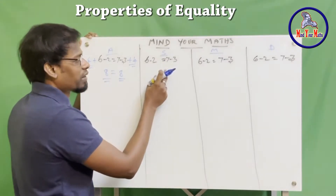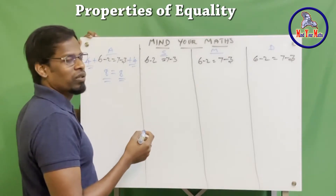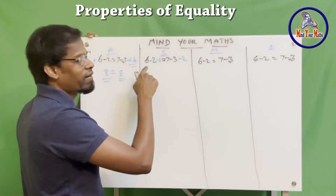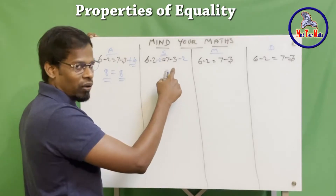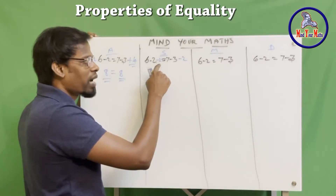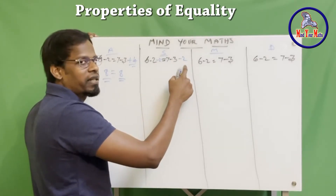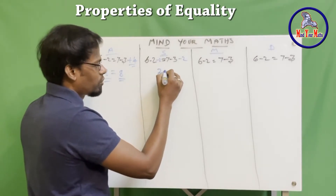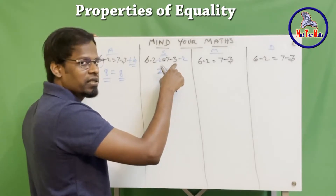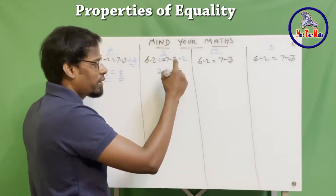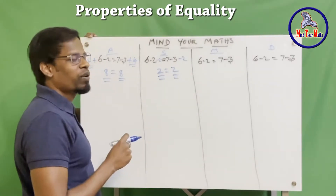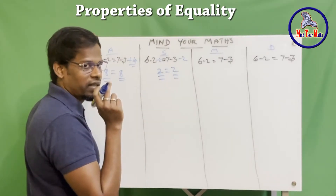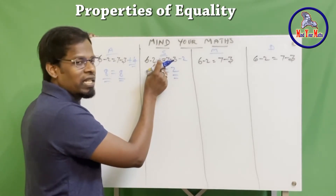Now let's come to subtraction. We subtract 2 from both sides — minus 2. Before subtracting, it was 4 equals 4. Now we are subtracting 2 from both the left-hand side and right-hand side. So 6 minus 2 is 4, 4 minus 2 is 2. And 7 minus 3 is 4, 4 minus 2 is 2 again. So the equality is maintained: 2 equals 2. The left-hand side is equal to the right-hand side, and we have subtracted the same value from both sides.